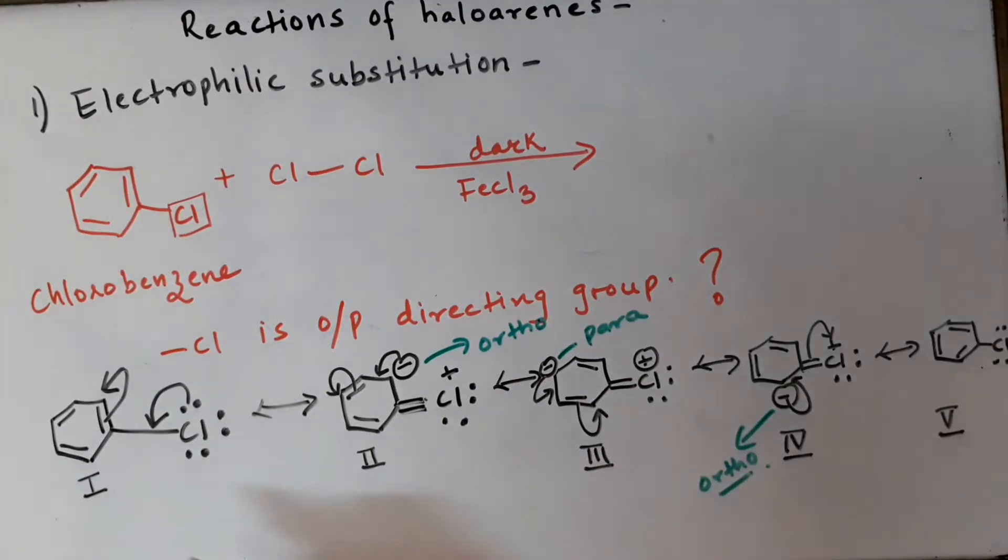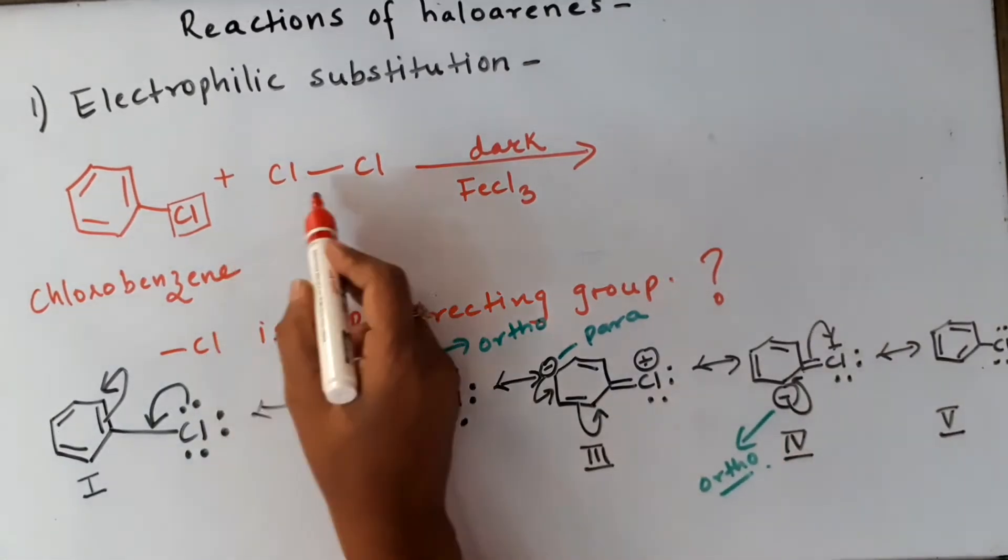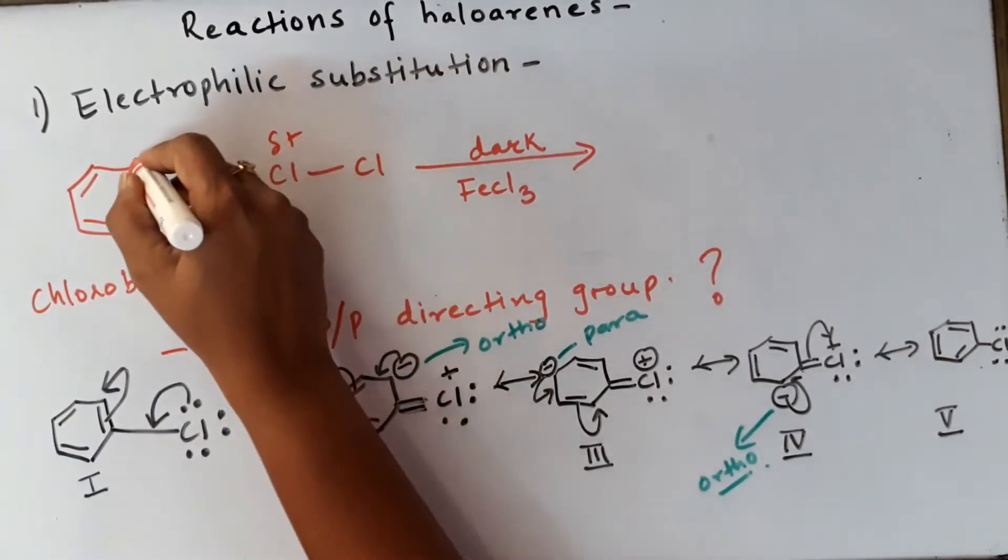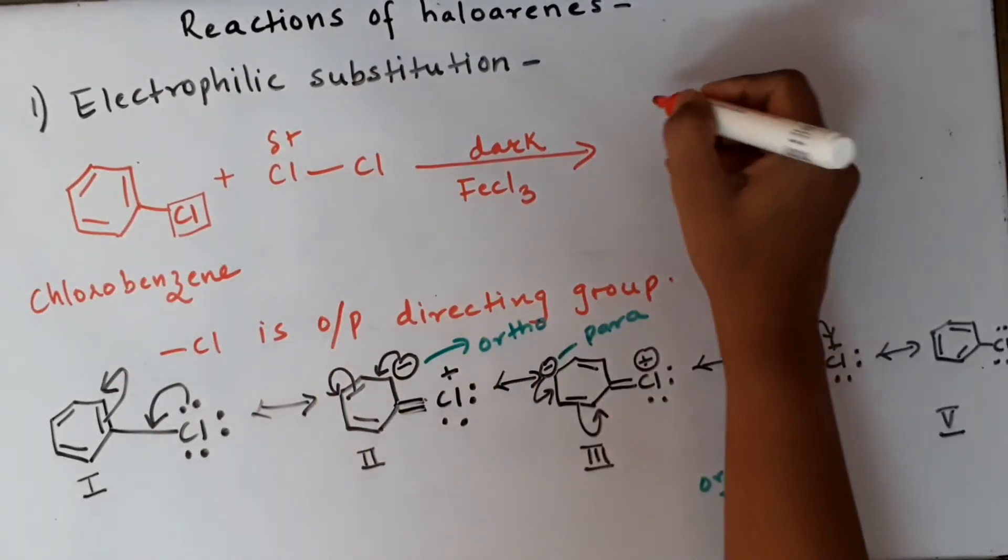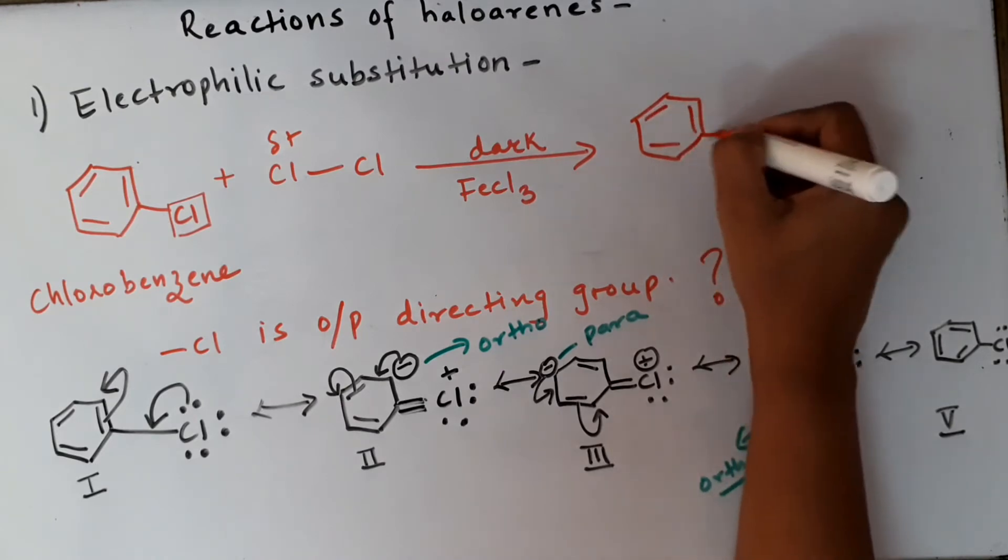We will label them as structure one to five, and we can see that ortho, para, and ortho carbons are electron rich. So in this manner we can make out that ortho and para positions are those positions where the Cl+ from the halogen can easily attack. When the attack takes place at ortho and para position, the products formed will be ortho-dichlorobenzene.